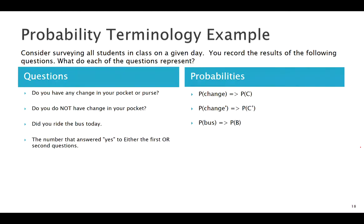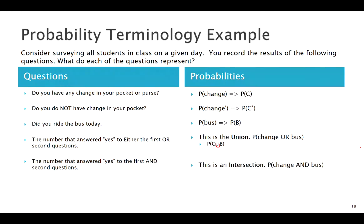Maybe we record the number that answered yes to either the first or the second questions. So people that have change or rode the bus. That is what we call a union. The probability of change or bus, or we could write it like this with our symbol U. What about if we recorded the number of people that said yes to the first question and the second question? These are people that had change and rode the bus. That's the intersection of C and B.